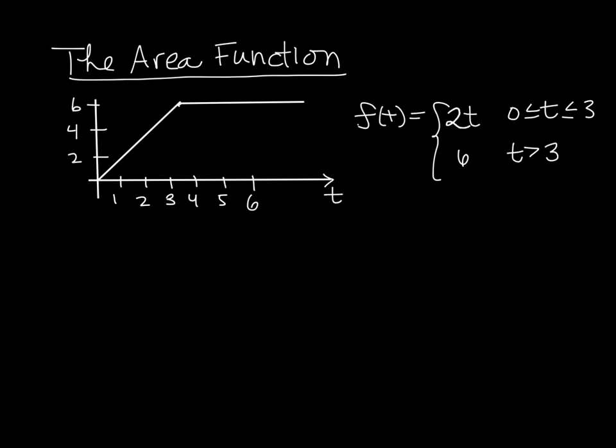So I've started by graphing this function f of t. f of t is 2t if t is between 0 and 3, and then it's equal to the constant value of 6 if t is greater than 3. If t is 0, f of 0 is 0, so that's this point right here. This is a piecewise linear function. If t is 3, then 2 times 3 is 6, so the value at 3 is 6. And then if t is bigger than 3, we get the constant value of 6.